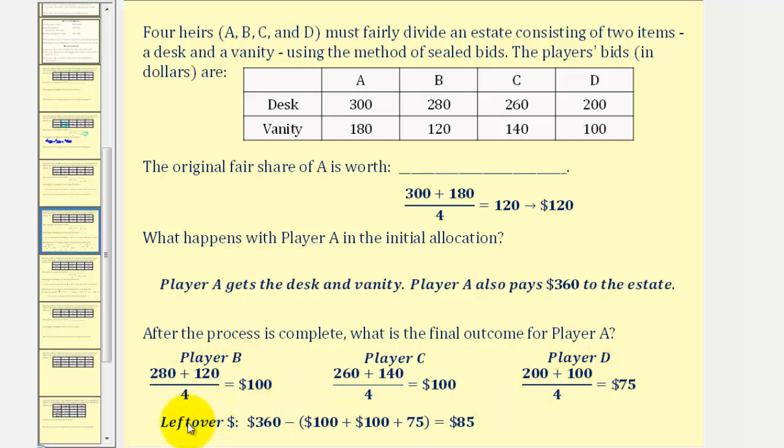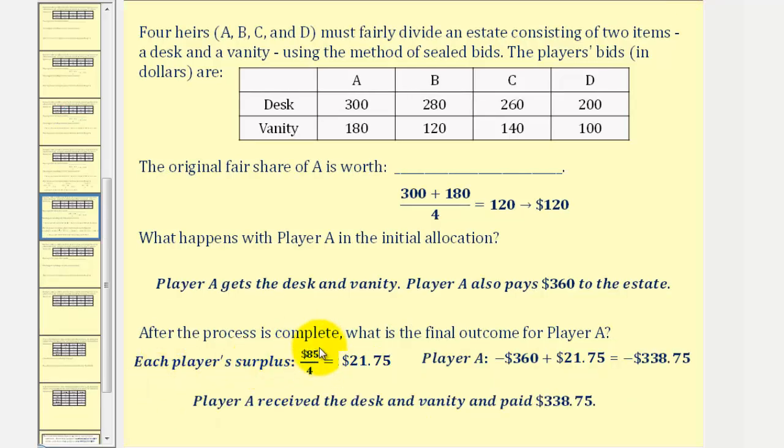Player A paid $360 to the estate. Notice that $275 from that amount goes to players B, C, and D, leaving excess cash of $85. If we take the remaining cash of $85 and divide by the number of players, or divide by four, this gives us $21.75, which every player receives.